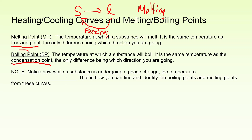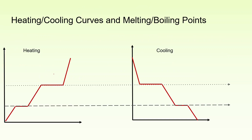Notice that while a substance is undergoing a phase change, the temperature remains constant — and that's how you can identify the boiling points and melting points from these curves. For example, here I have a heating curve — I can tell because it starts at a low temperature and ends at a high temperature. For the same substance I have the cooling curve, starting at a high temperature and ending at a low temperature.